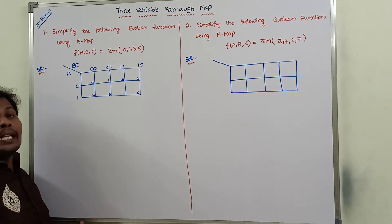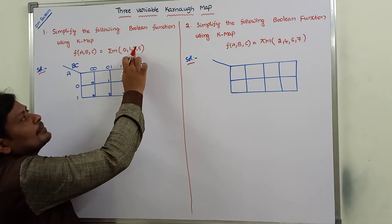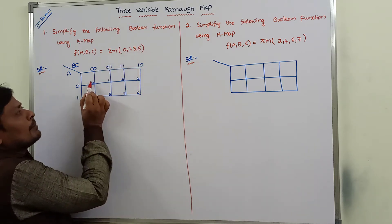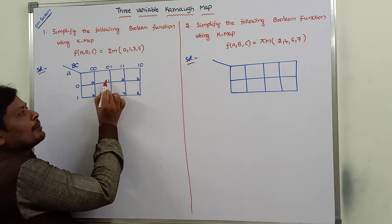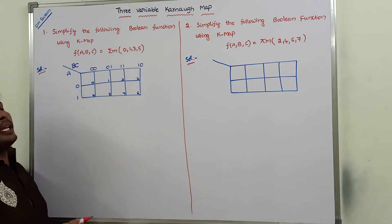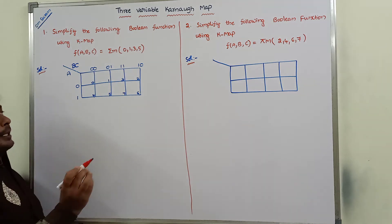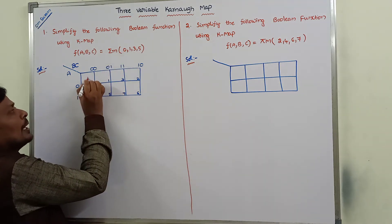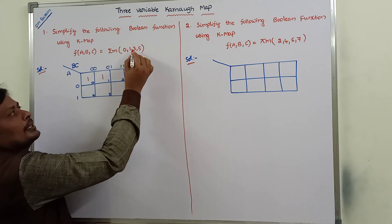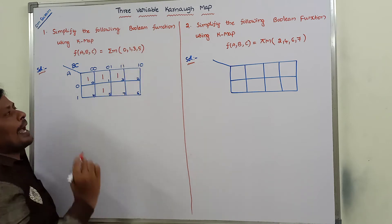Now, what are the minterms given? The 0th minterm, 1st minterm, 3rd minterm, and 5th minterm. So, at the 0th minterm position we place 1, at the 1st minterm we place 1, at the 3rd minterm we place 1, and at the 5th minterm we place 1.